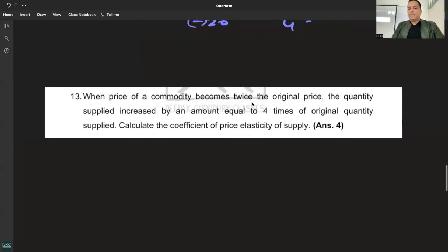When the price of a commodity becomes twice the original price, the quantity supplied increases by an amount equal to four times of original quantity supplied.